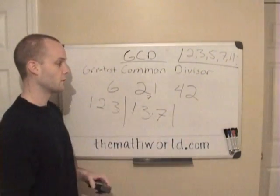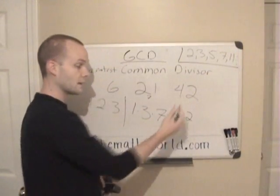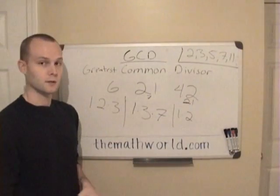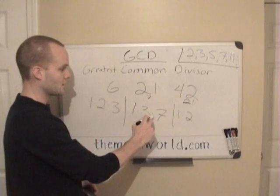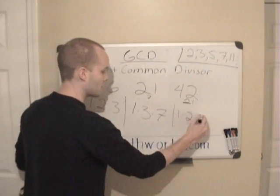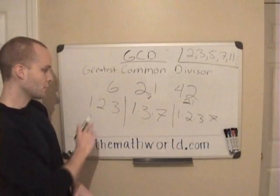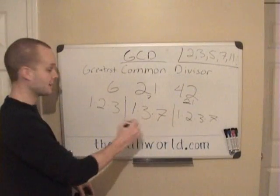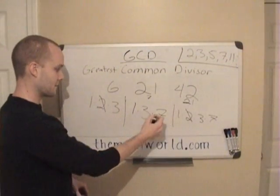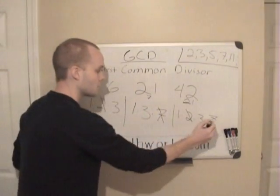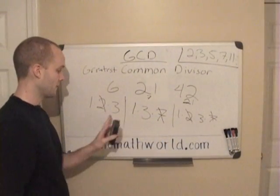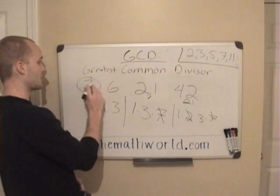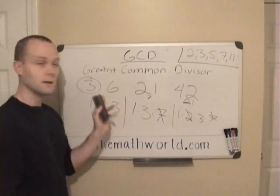Then for 42: since it's even, we write down 1 times 2, and dividing gives us 21. We already know 21 breaks down to 3 and 7. So 42 = 1 times 2 times 3 times 7. Now looking at all three, there's a 2 in 6 and 42 but not in 21, so we cancel the 2s out. There's a 7 in 21 and 42 but not in 6, so we cancel the 7s. What we're left with is just 3 and 1. So 3 times 1 is 3 — the greatest common divisor for all three numbers is 3.